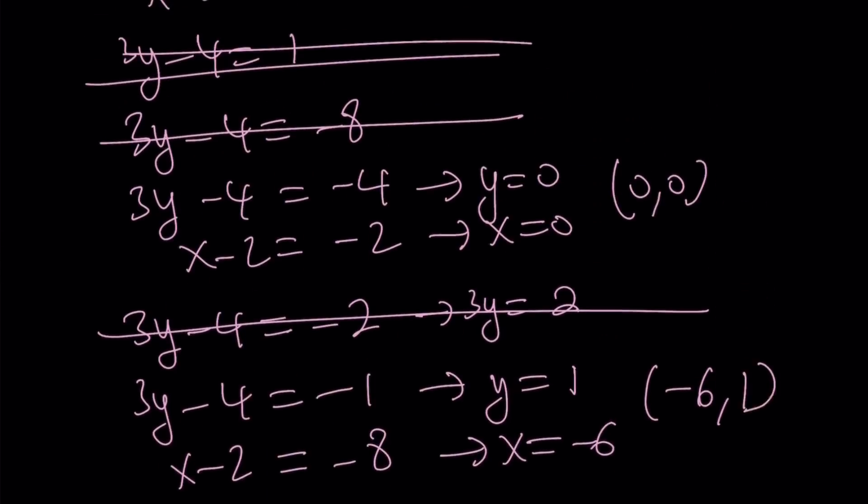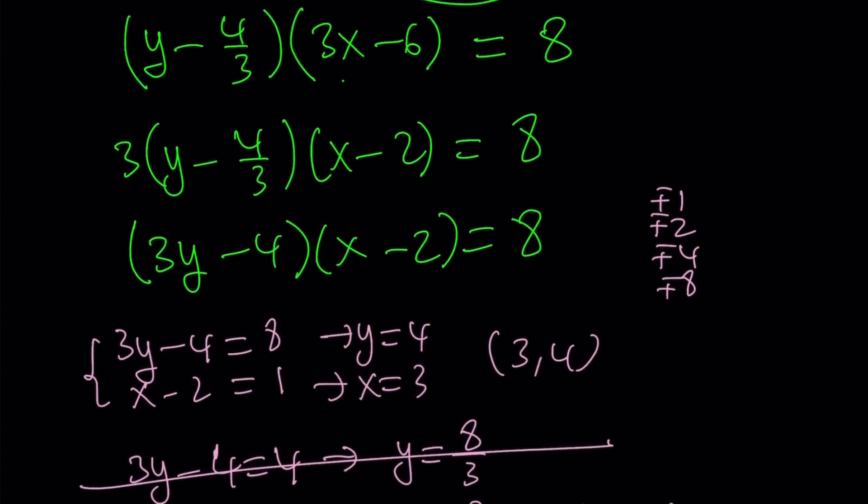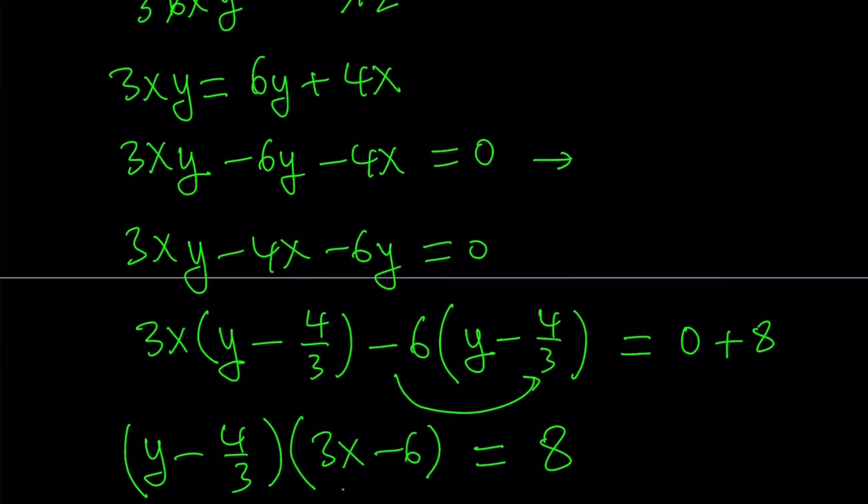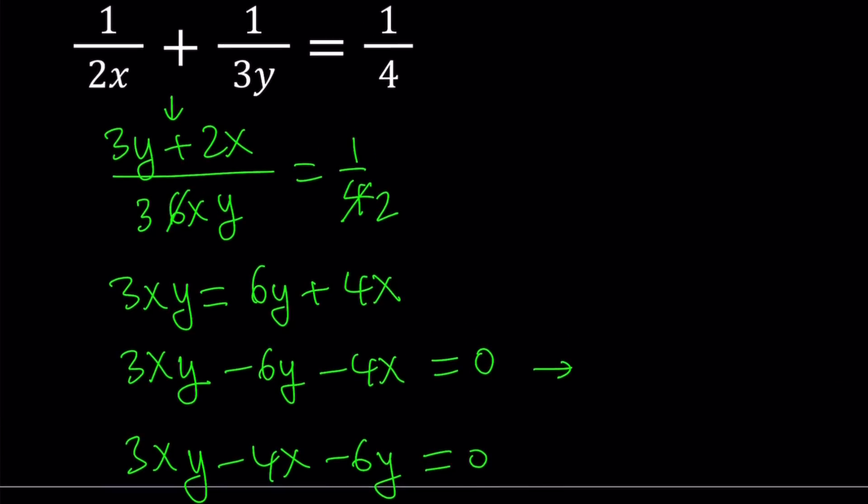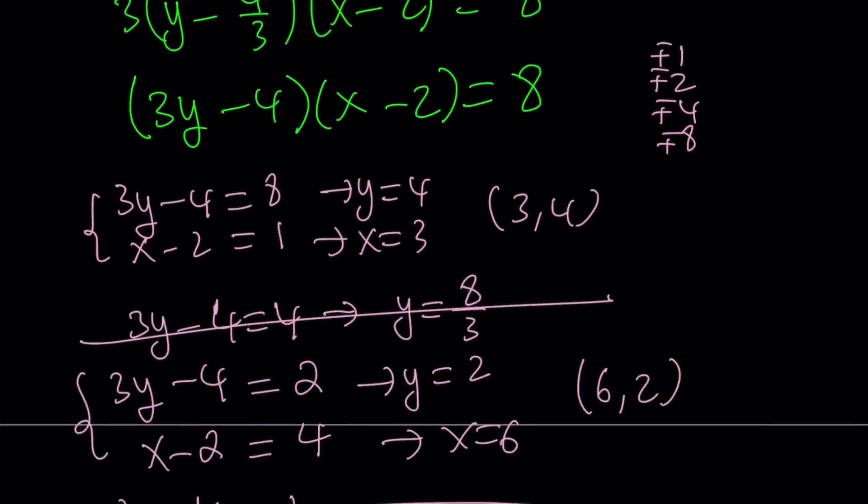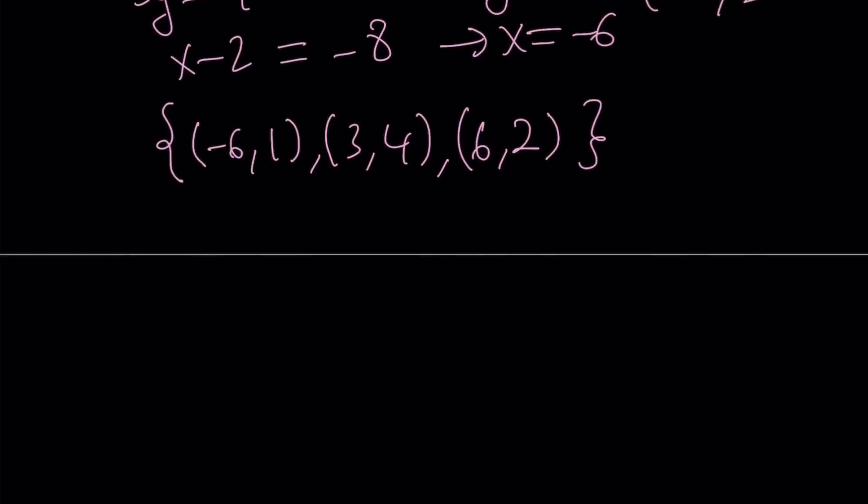So what is that supposed to mean in terms of the graph of this function? You can definitely graph this as a function and you're going to get y equals something. I believe it's going to be like a rational function, like a hyperbola. And you're going to be looking for lattice points. Lattice points are points with integer coordinates. And there aren't that many of them on this curve.